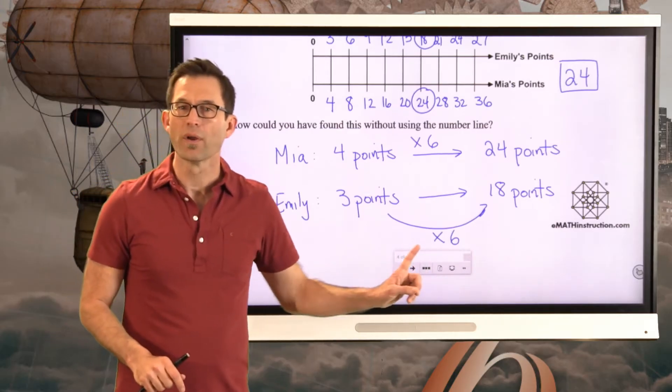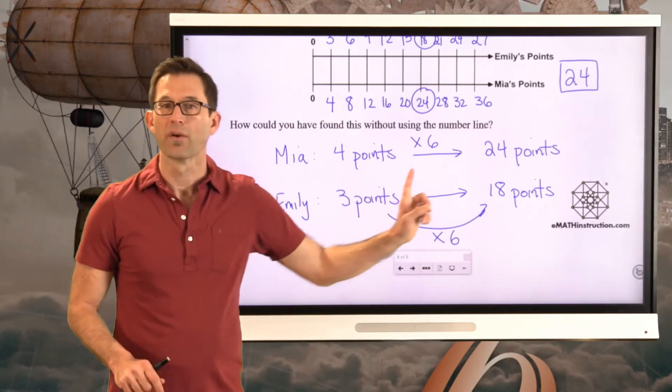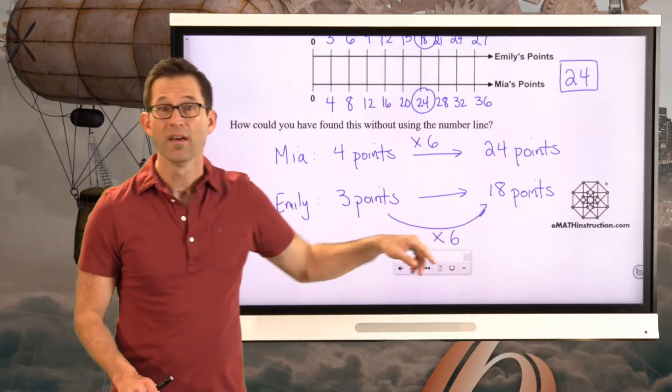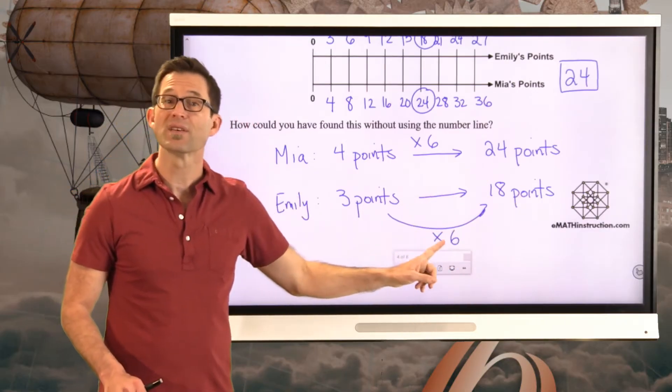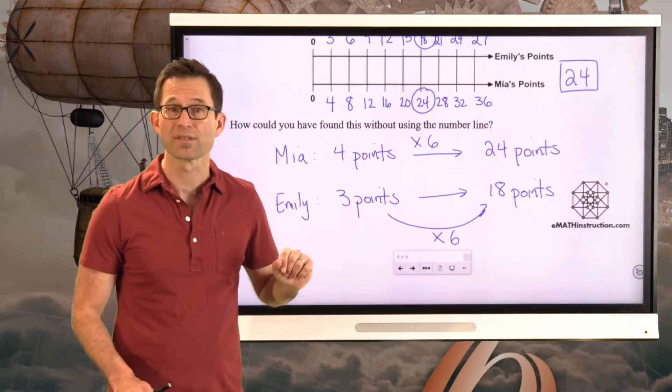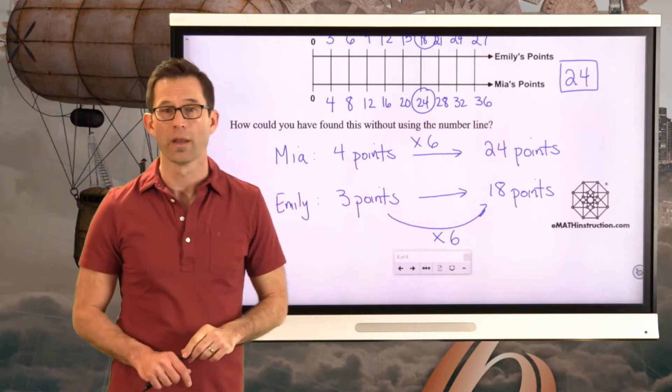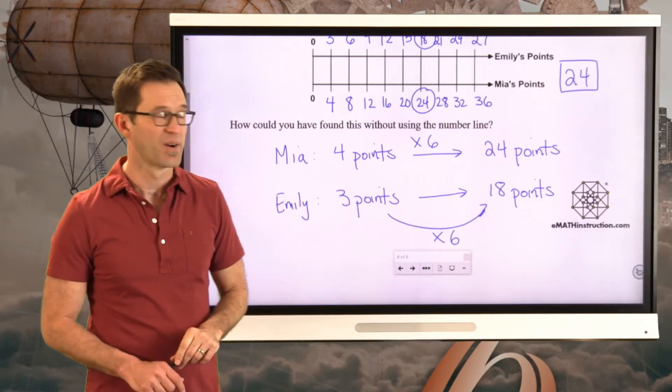Now, if it's not obvious what you have to multiply by to go from here to here, then you just divide. You just simply take the 18, divide by 3, and that gives us that scaling factor. We can then use that to scale Mia's points from 4 up to 24.